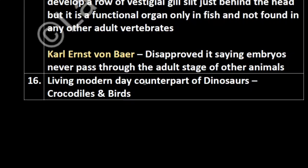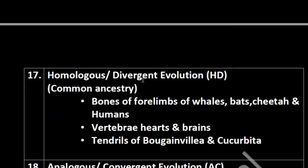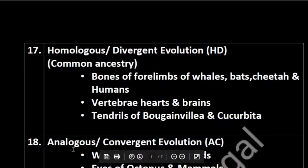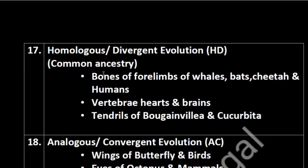Living modern-day counterparts of dinosaurs are crocodiles and birds — this diagram is an important point. Now for Homologous and Analogous structures — there is often confusion. The simple trick is HD and AC: H for Homologous, D for Divergent, A for Analogous, and C for Convergent. Homologous structures represent common ancestry.